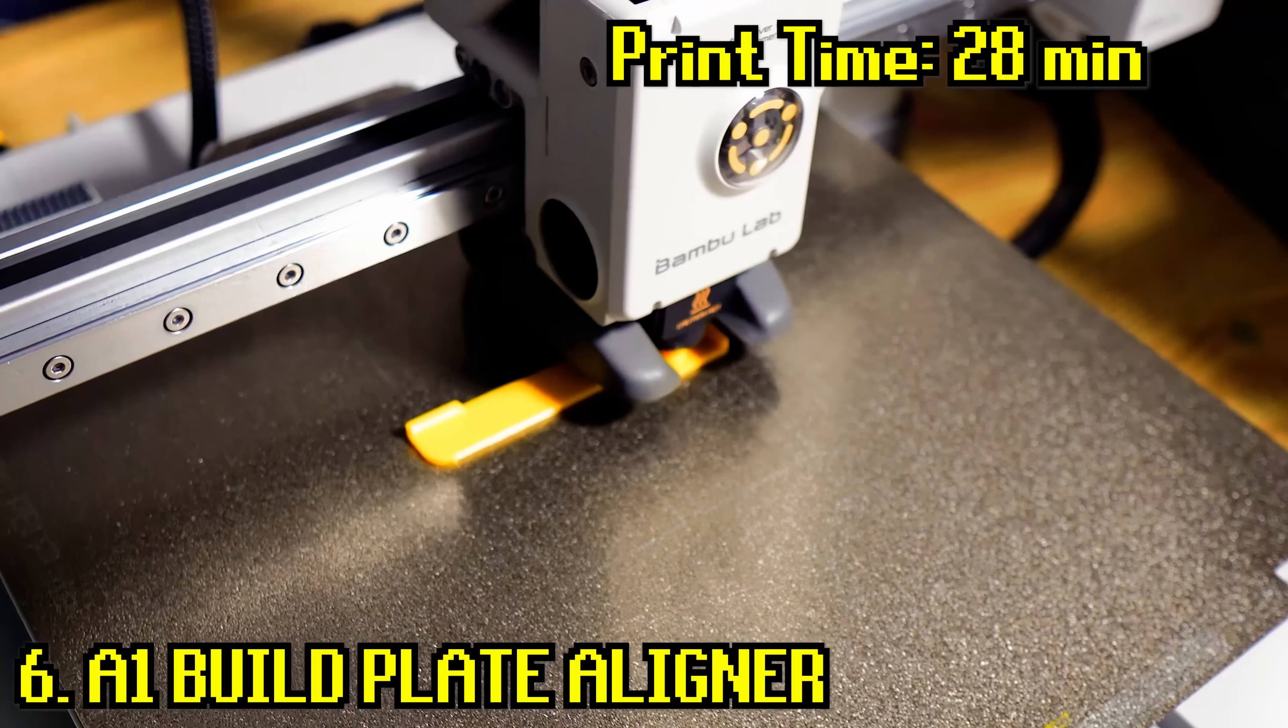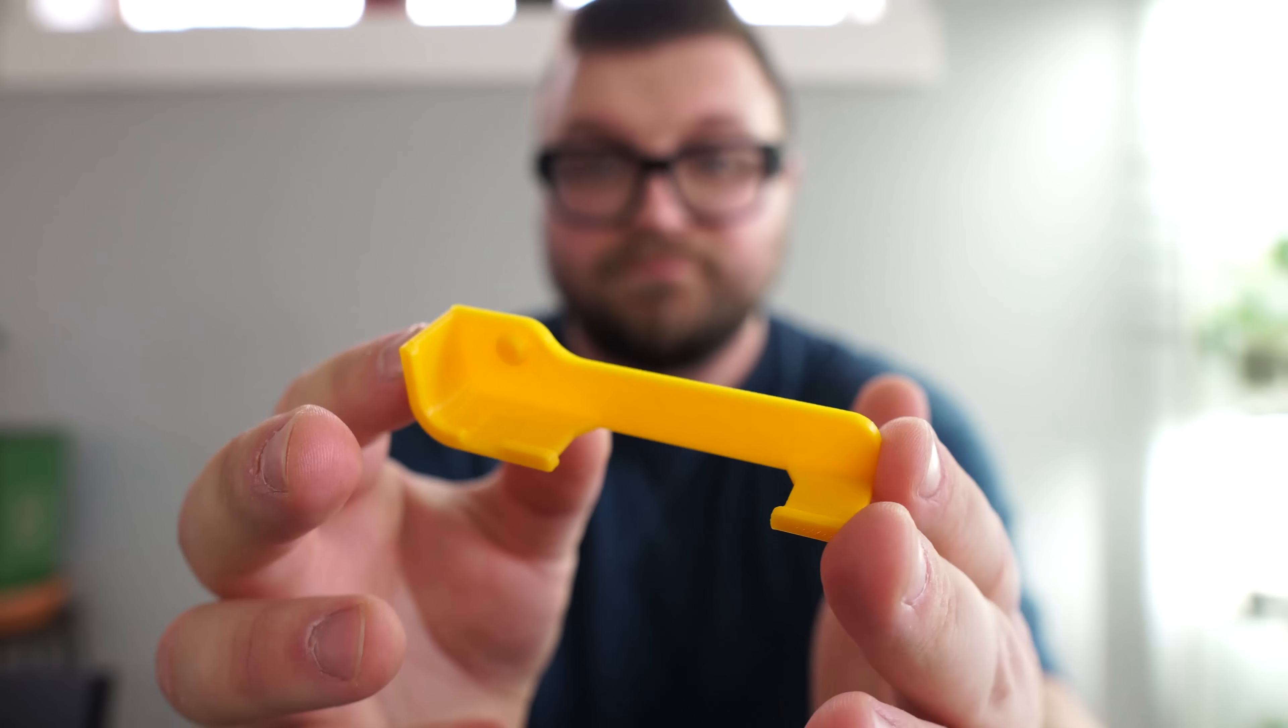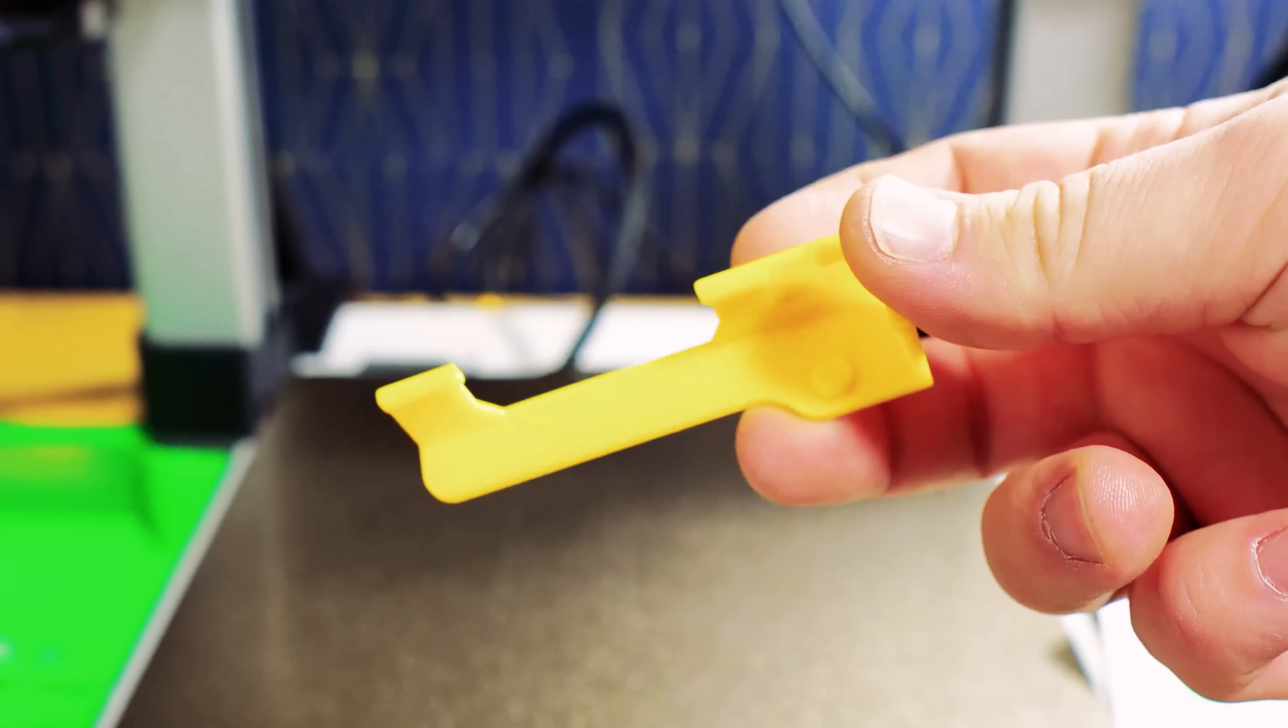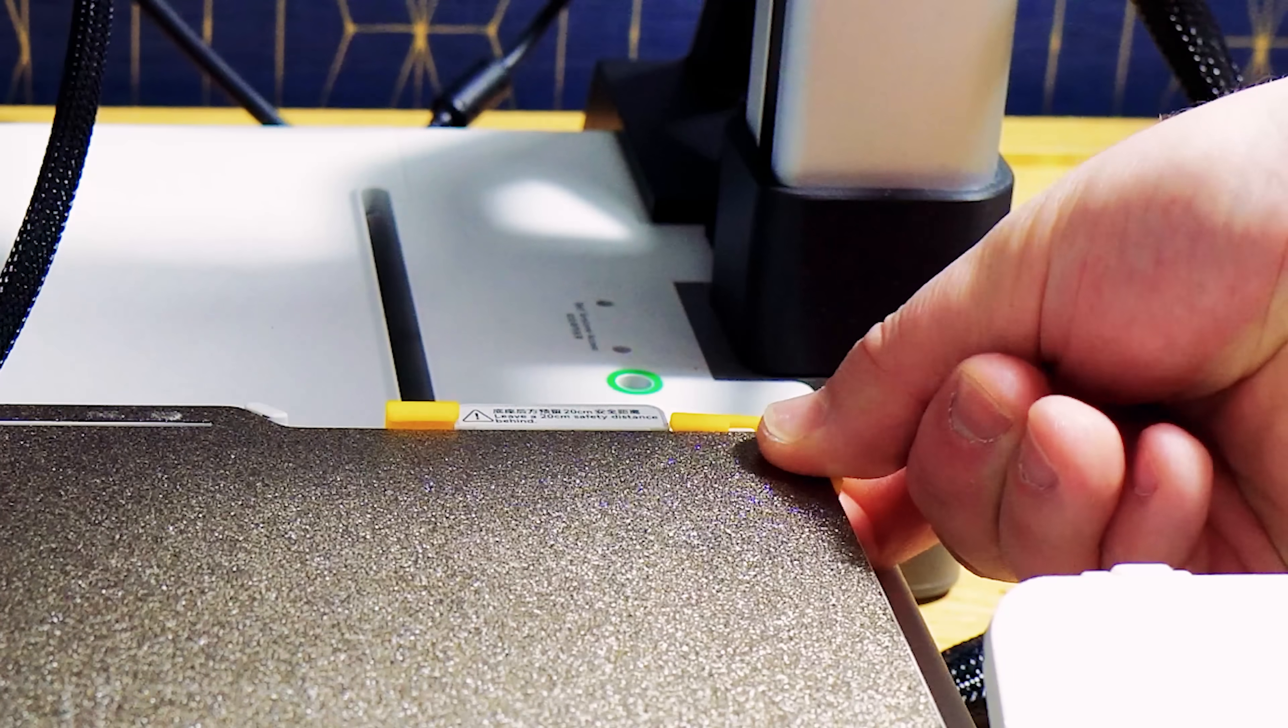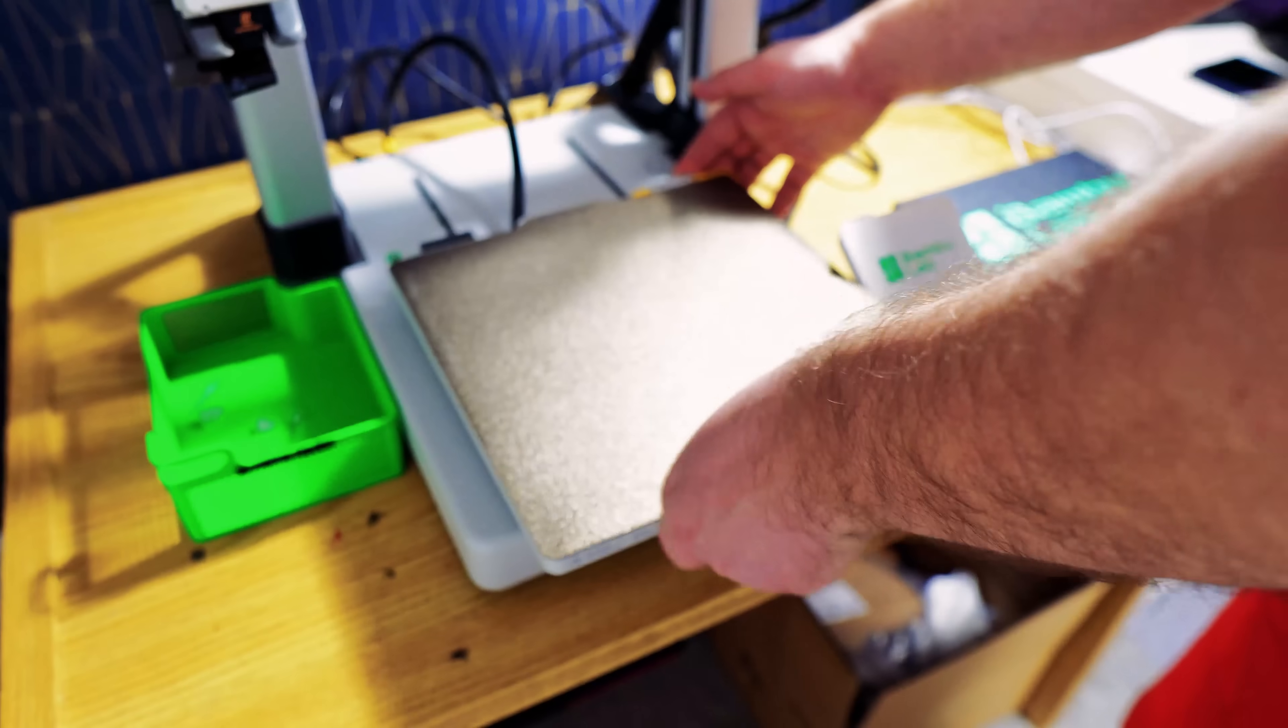Up next, we have another tiny print that brings a quality of life improvement to your 3D printing journey. This is a build plate aligner that helps make sure your plate is constantly installed correctly and eliminates the time needed to make adjustments.